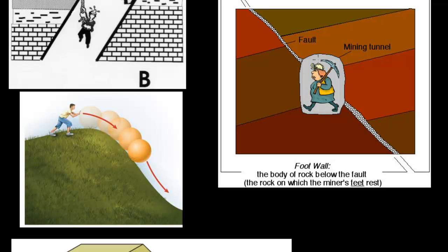If you take a look, she's walking in this highly magnified fault or mine, and she's got this block hanging over her head — this is called the hanging wall. And the one where her feet are actually walking is called the foot wall. The body of rock above the fault hangs over the miner's head; the body of rock below the fault is where the feet rest. That's how we get the terminology.